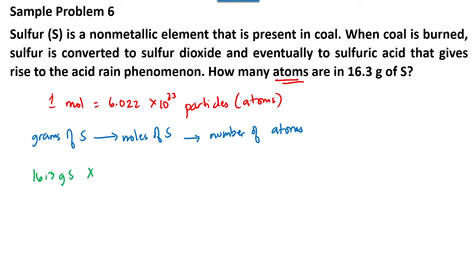The molar mass of sulfur is 32.07 grams. So one mole of sulfur over 32.07 grams of sulfur times the number of atoms. So we have 6.022 times 10 to the 23rd power atoms over one mole.